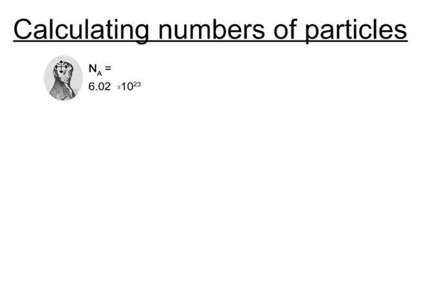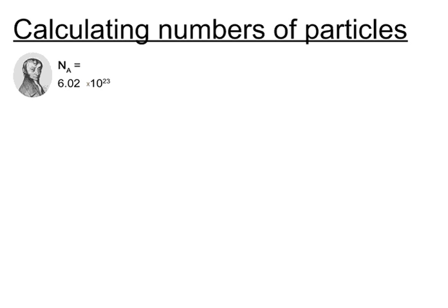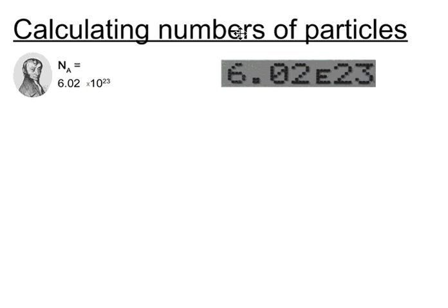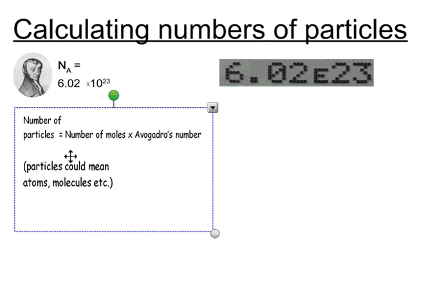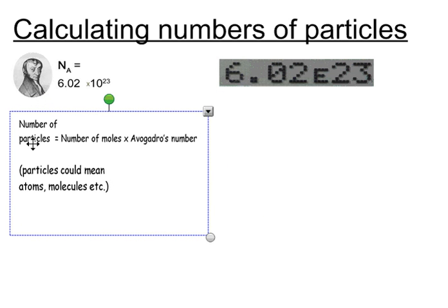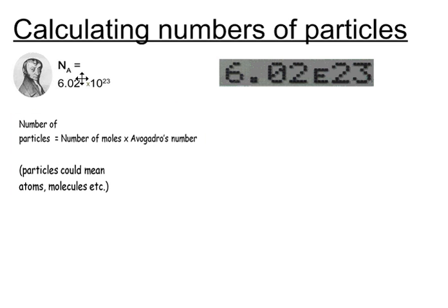Calculating numbers of particles. To do this, we need to use the Avogadro constant. If you type that number into your calculator, it may appear like this. To work out the number of particles, we can use this equation: the number of particles is equal to the number of moles multiplied by Avogadro's number.